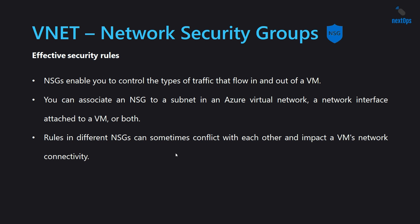There is one more topic in NSGs — effective security rules. NSGs enable you to control the types of traffic that flow in and out of a VM or subnet. When we associate the NSG with a VM's interface, it applies to that single VM. If associated with a subnet, it applies to all VMs in that subnet. Rules in different NSGs can sometimes conflict and impact a VM's network connectivity — that's what we saw earlier, figuring out which rule is causing the problem and which is taking precedence between the interface NSG and the subnet NSG.